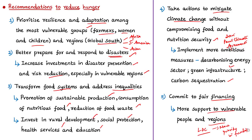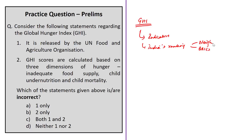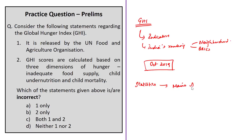To summarize the Global Hunger Index discussion: we covered the index in detail including its indicators, India's position at 102nd out of 117 countries, and compared India's performance with neighboring countries and BRICS nations. We also discussed the report's recommendations for reducing hunger. Released in October 2019, this index is important from both the prelims and mains perspective, particularly regarding India's progress toward the 2030 sustainable development goals.